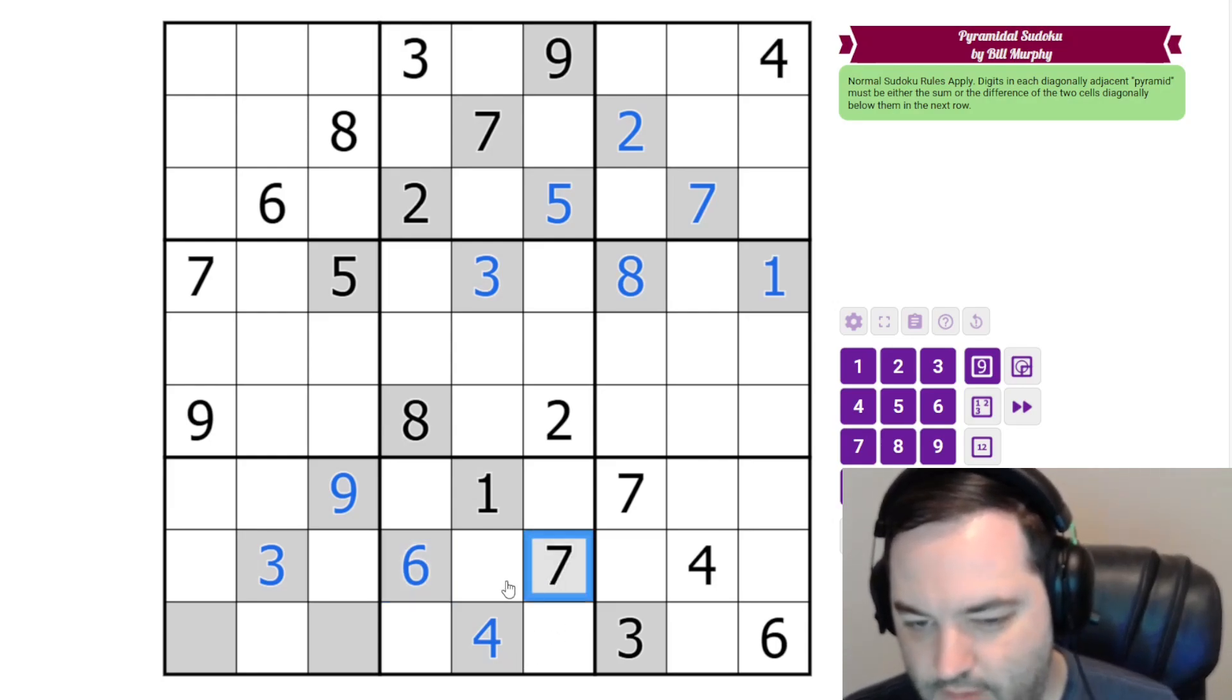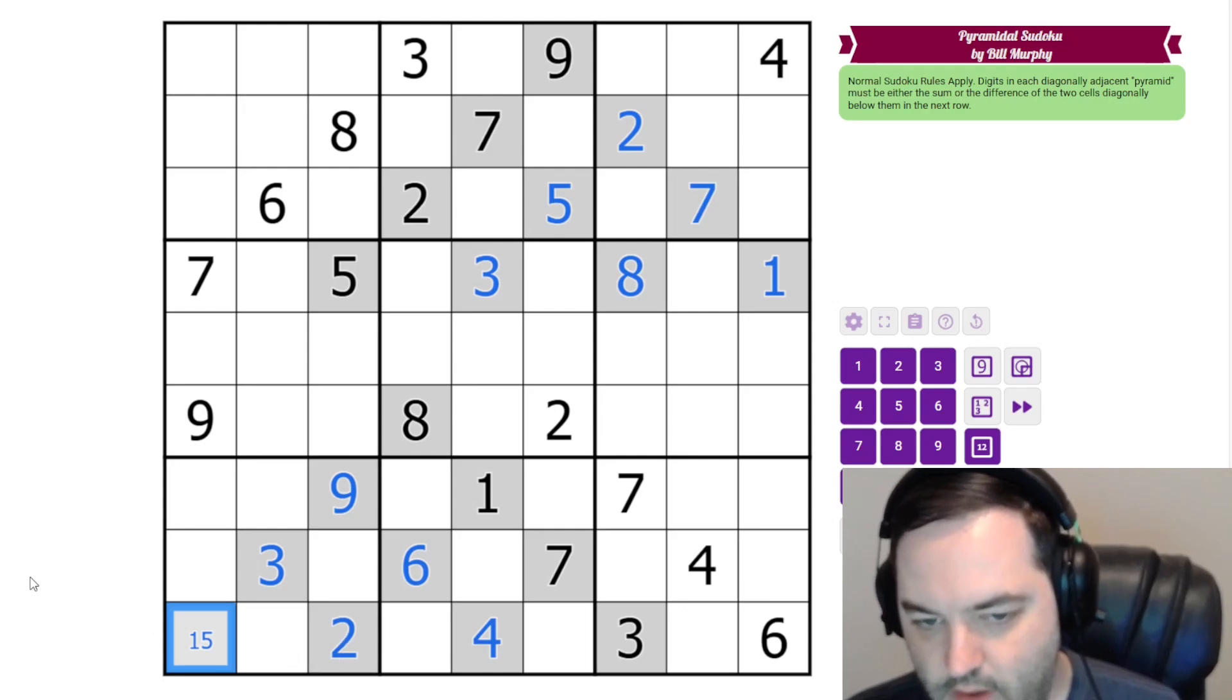Six as well can't be a difference and it's kind of the same thing here. Seven is too big of a difference to go with three. Six is too big of a difference to go with four because again we would need ten or we would need to go into the negatives. So this is a sum that's two. And finally three can be a difference. It would be five minus two. It could also be a sum, one plus two, and that one is unresolved just considering the variance. So we'll get to that when we do the rest of the puzzle.